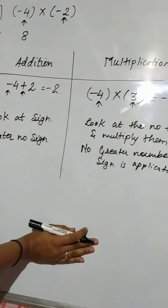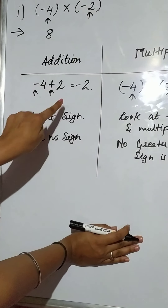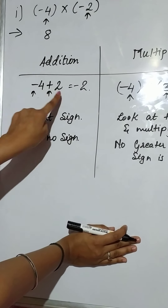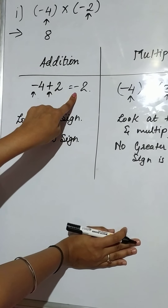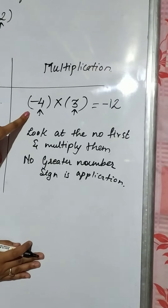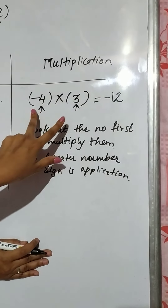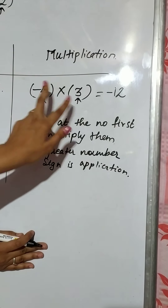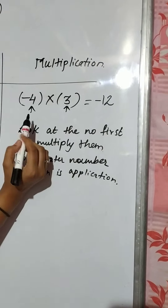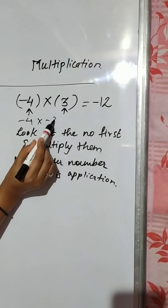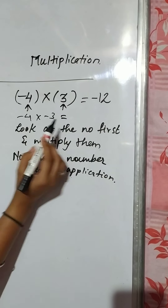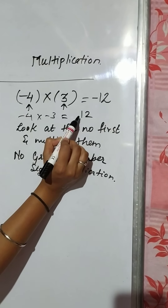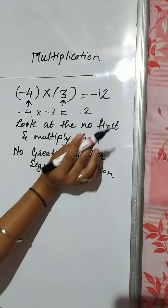So this is the major difference: when it is addition, you first look at the sign, perform the operation, then give the greater number's sign. In multiplication, you first multiply the numbers, then directly give the sign. For example, minus 4 into minus 3: 4 threes are 12, and minus minus is plus, so our answer is plus 12.